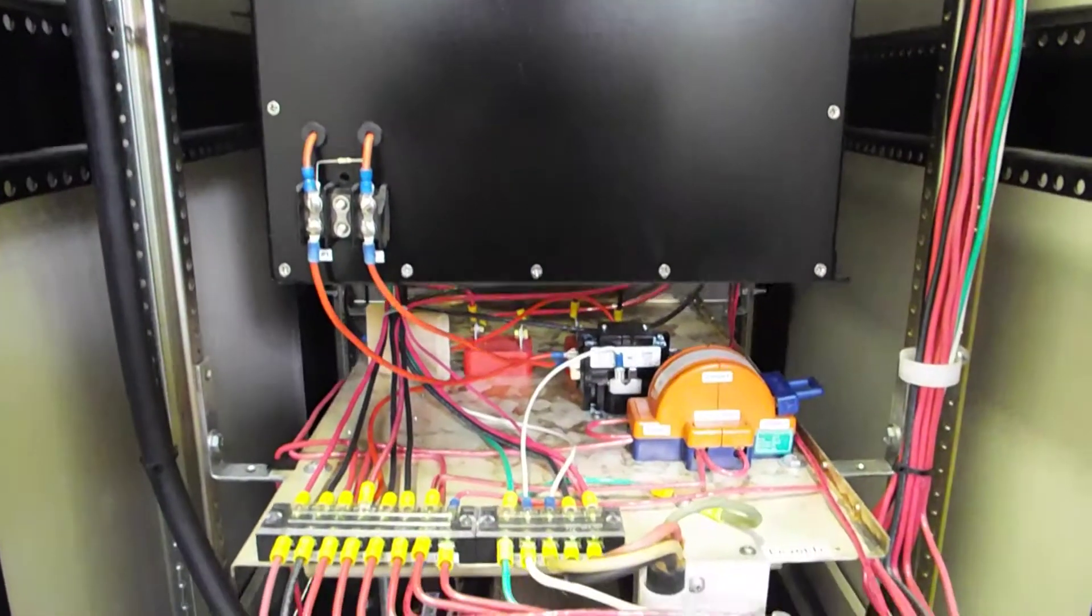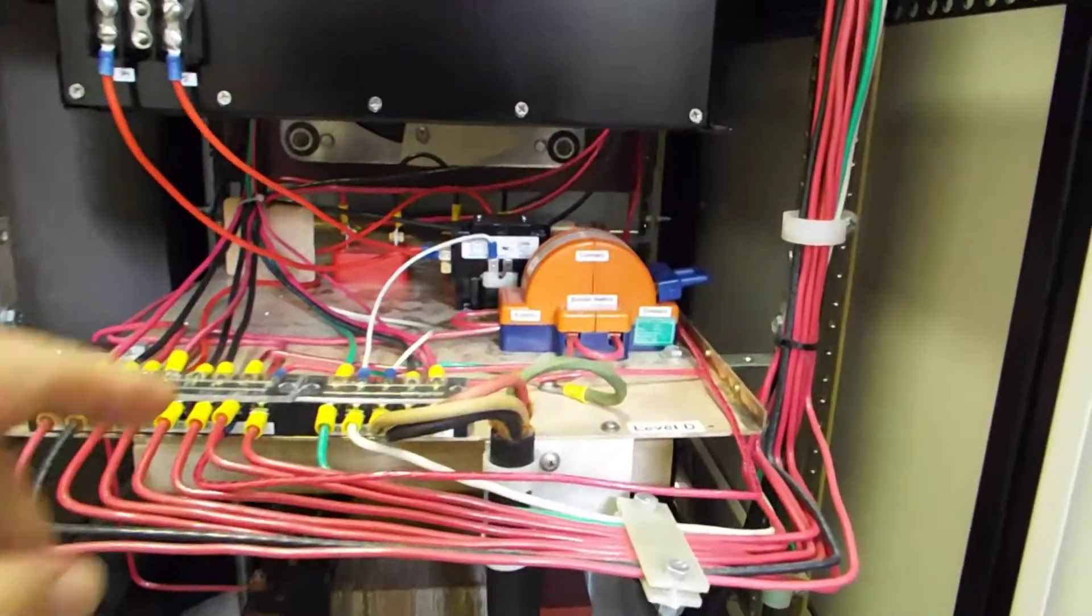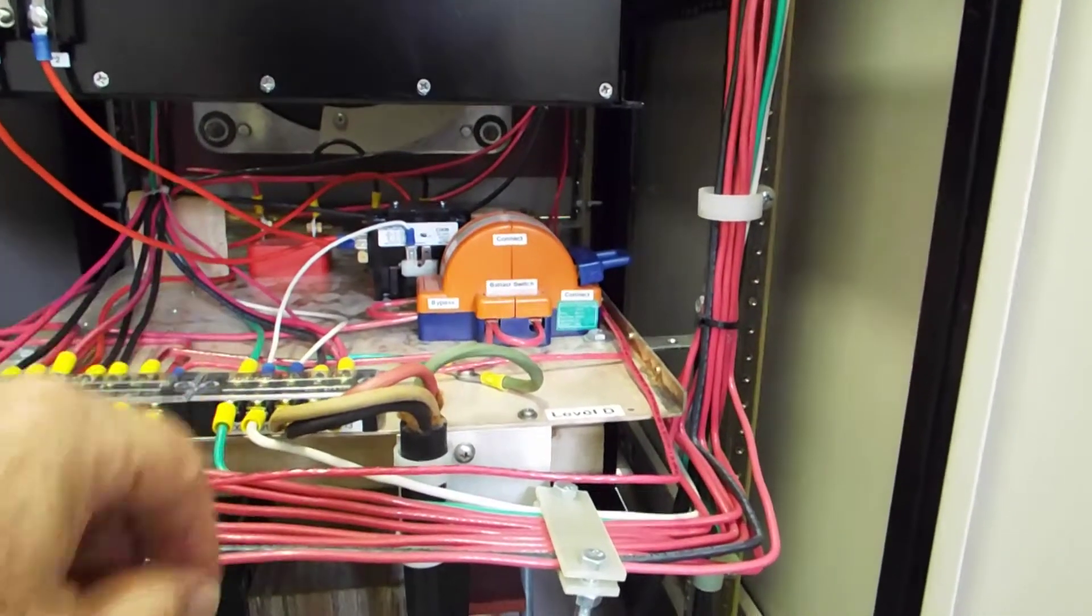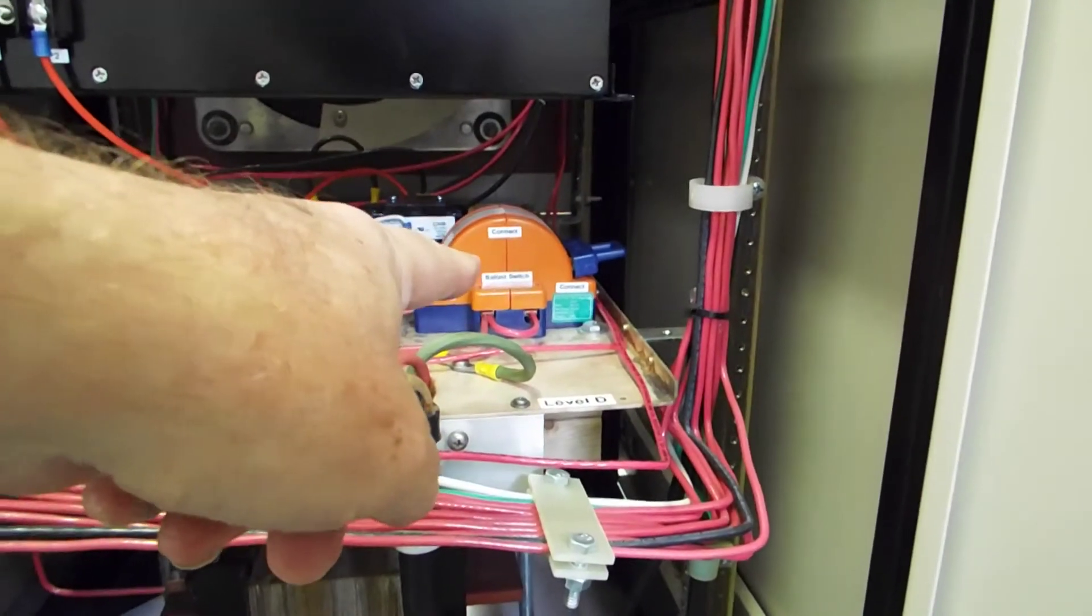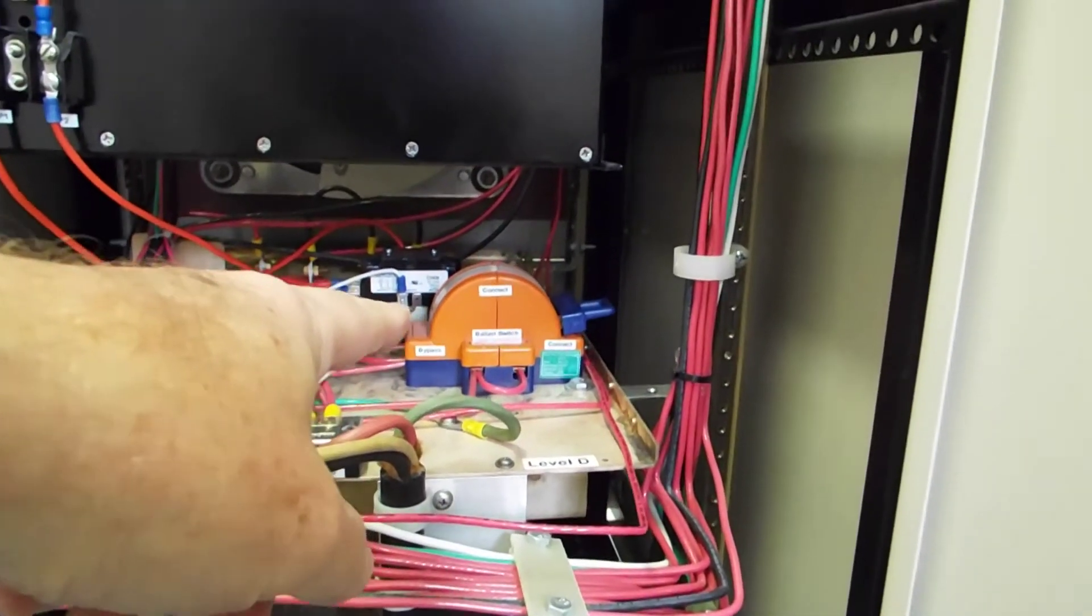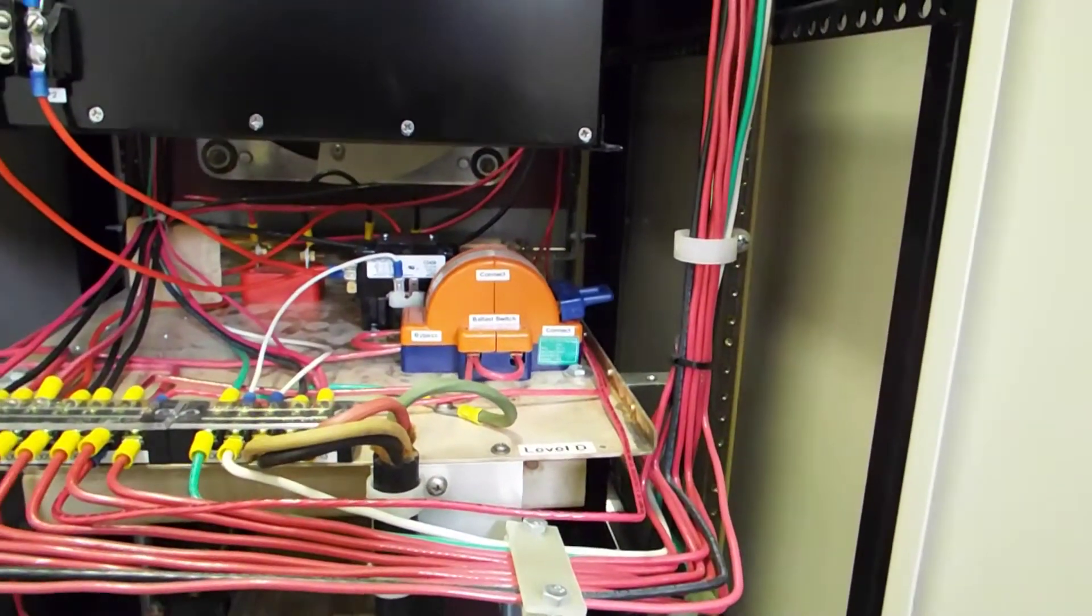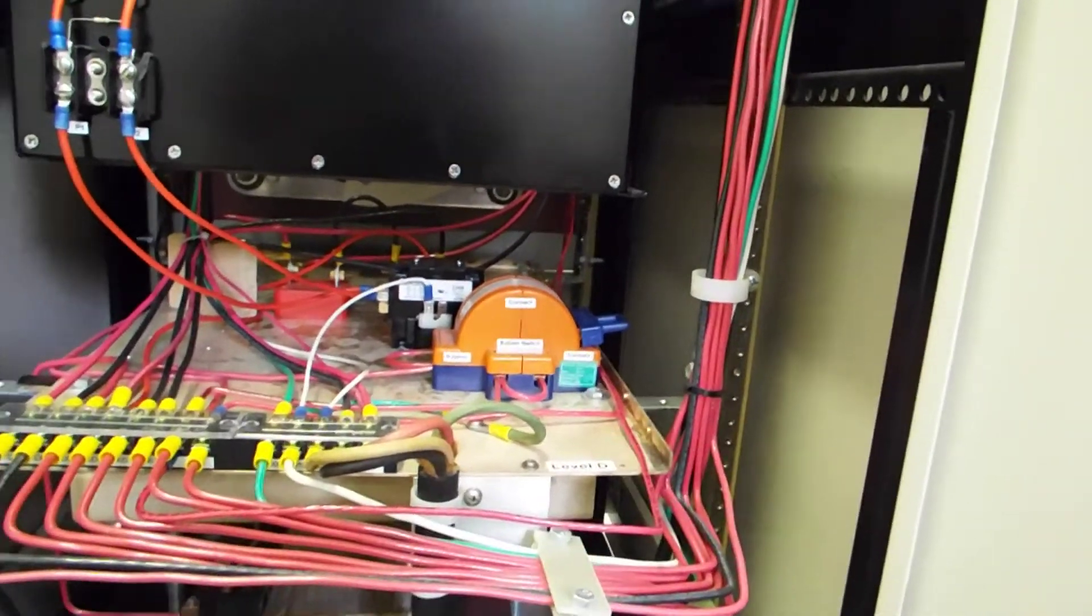And moving down again, another tray. There's the contactor for the power factor control. And here's a nice switch I can use to enable and disable or bypass and connect the ballast, which I'll show you in a minute. I never have had a need to do that, but it's there.